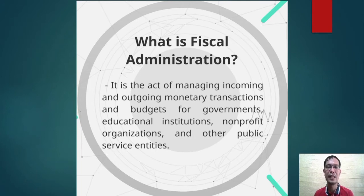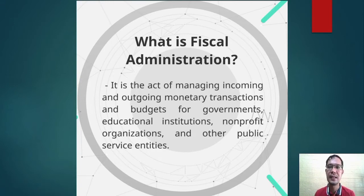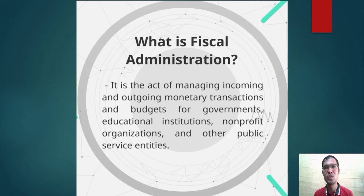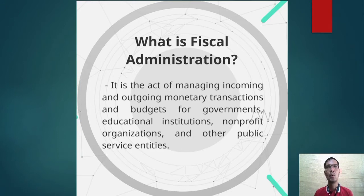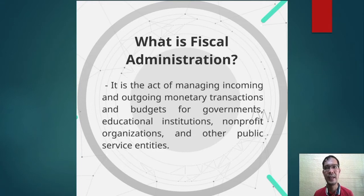There are inclusions in fiscal administration. These involve the systems, the structures, the processes, the officials and personnel, and also the policy environment governing the intergovernmental and local fiscal relations. What will happen if these five inclusions are not present in fiscal administration? Can an agency or department achieve its vision, mission, goals, or objectives? Perhaps it will not.